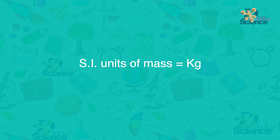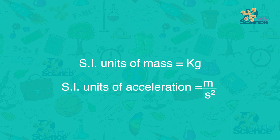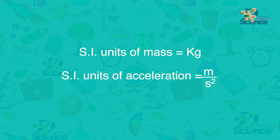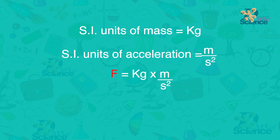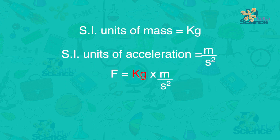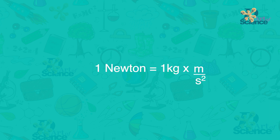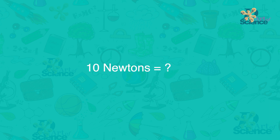The metric units of mass are kilograms, and the metric units of acceleration are meters per second squared. So force is kilograms into meters per second squared. One newton is the amount of force required to give a 1 kg mass an acceleration of 1 meter per second squared. To say 10 newtons of force, we write 10N.